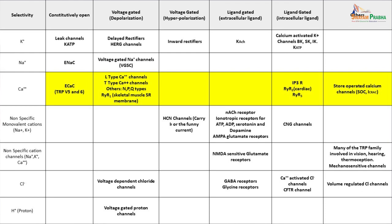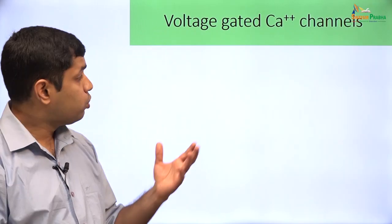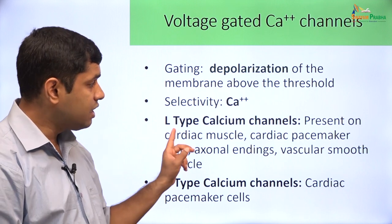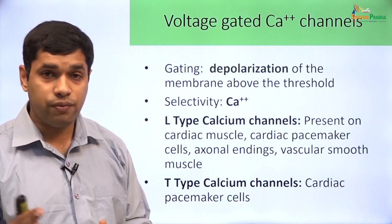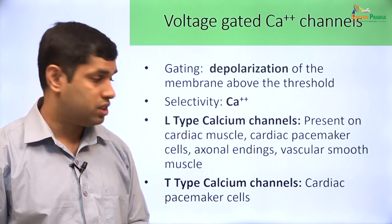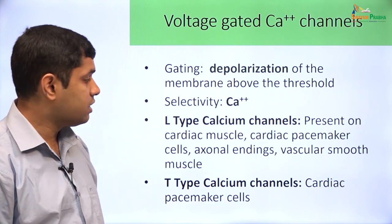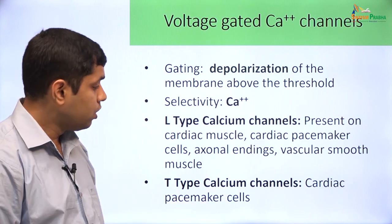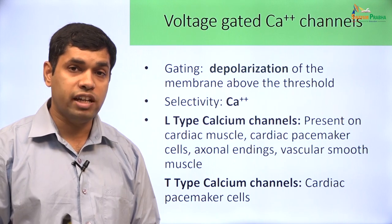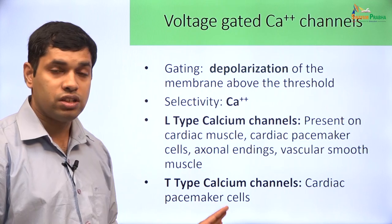We will start with voltage-gated calcium channels. These open with depolarization and are selective for calcium. There are two types: the L-type calcium channel — L for long-lasting — and the T-type calcium channel, which has only a transient opening. The L-type is present on cardiac muscle cells, pacemaker cells, axonal nerve endings, and vascular smooth muscle. The T-type calcium channel is primarily seen in cardiac pacemaker cells.